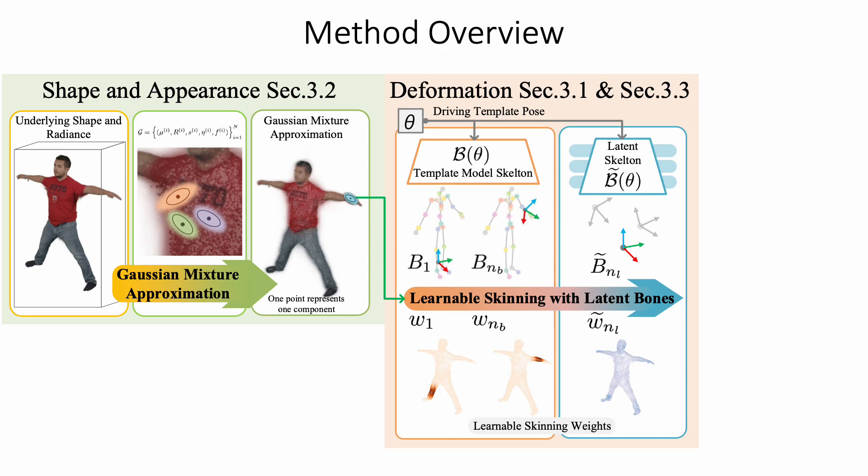However, a predefined generic template skeleton may not cover more complex deformation, such as the motion of long skirts. Our insight is that the complex deformation is also driven by unobserved latent bones, and we can optimize additional latent bones and their skinning weights. Please see sections 3.1 and 3.3 for more details.